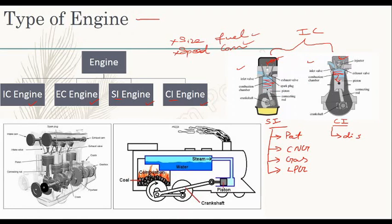For the external combustion engine, we're looking at the steam engine. We need coal to heat oil, heat water, and the water will generate steam. We move the pipe, move the piston, so power is produced and there is mechanical movement. This is the external combustion engine — the EC engine.